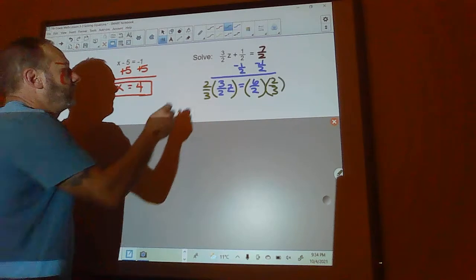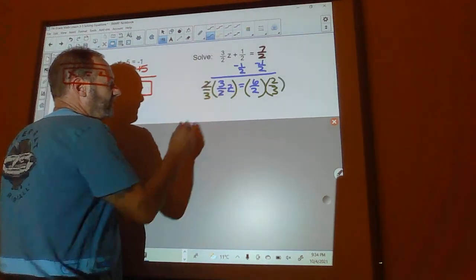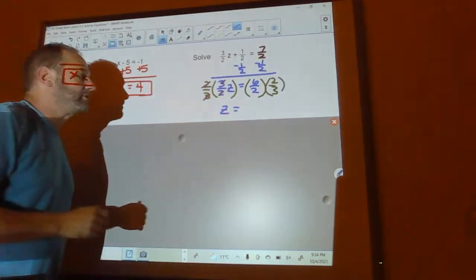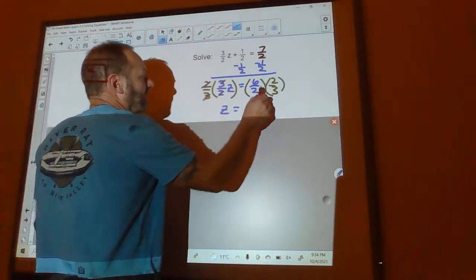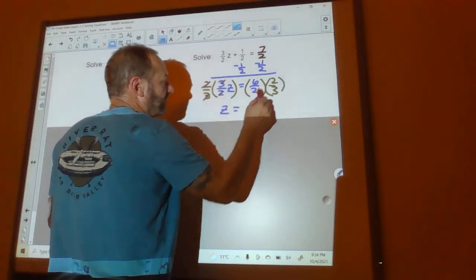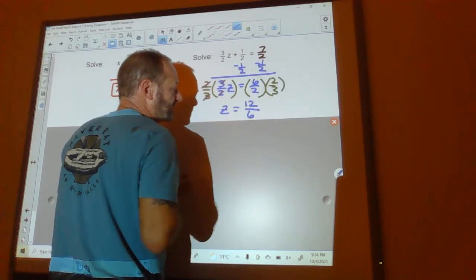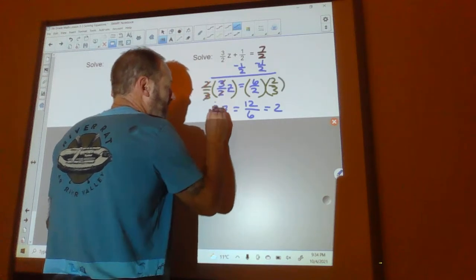What does that do? Well, what that does is this 2 cancels that 2, and that 3 cancels that 3, and so I'm left with z over here, which is what I wanted. Now over here, I can do 6 times 2 is 12, and 2 times 3 is 6, and then I can reduce that to 2. So z is going to be 2.